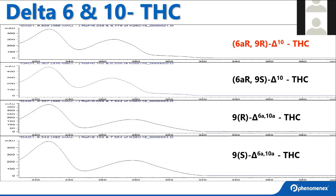Once we start talking about isomers and co-elutions, people ask whether UV spectra could resolve these compounds. The 6AR/9R delta 10 enantiomer does chromatographically resolve, but it shares almost exactly the same UV spectra as its enantiomer — as predicted. What I find interesting is that the diastereomers of these compounds actually have a slightly different UV spectrum. So perhaps the UV spectra could be used to differentiate between these enantiomers — going back to using a third parameter beyond retention time. I look to you: tell me if this is useful in your lab, or maybe we just allow them to co-elute.